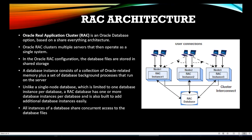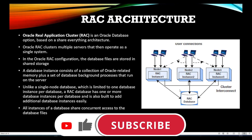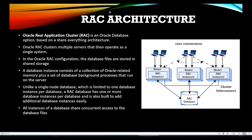A RAC database follows a share-everything architecture, meaning data on node one can be shared across node two and node three. Even though a RAC cluster has multiple servers, they operate as a single system. For the end user it is transparent — they are given only a SCAN connection string, and based on the load balancer they may be connecting to node one, node two, or node three.